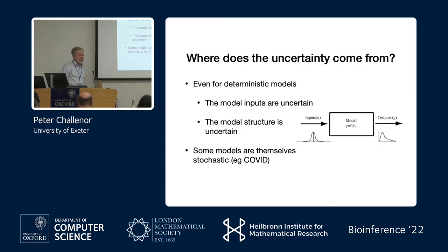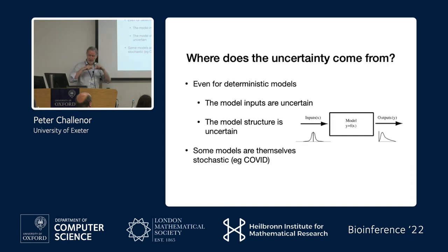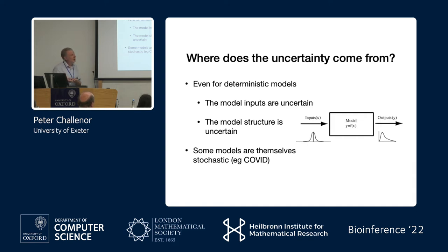This is a deterministic model — I'm talking mainly about deterministic models. Where does the uncertainty come from? Even for deterministic engineering models, the most certain models we have, like the bending of a beam, the model inputs are uncertain. We don't know Young's modulus all the way across our beam. And the model structure is uncertain, particularly for biological systems. Engineering systems, we still don't know model structure properly; biological systems are much more uncertain.